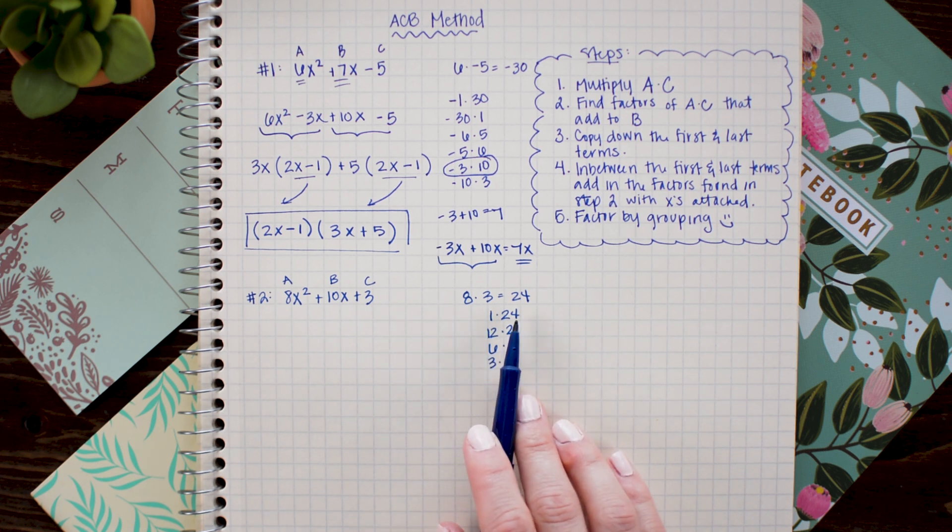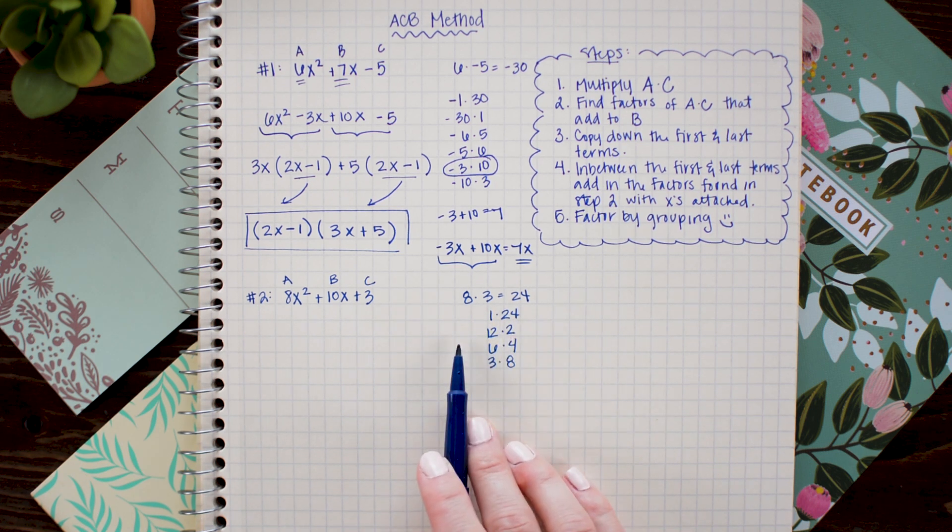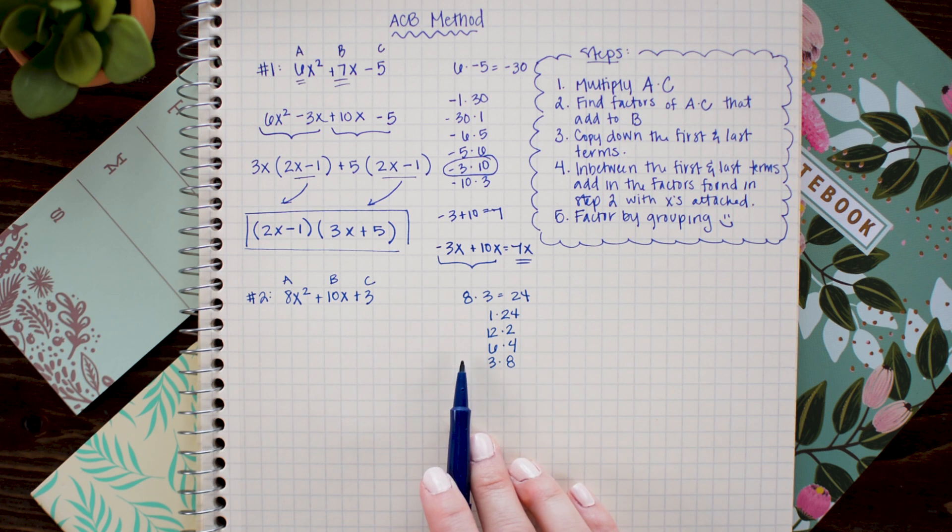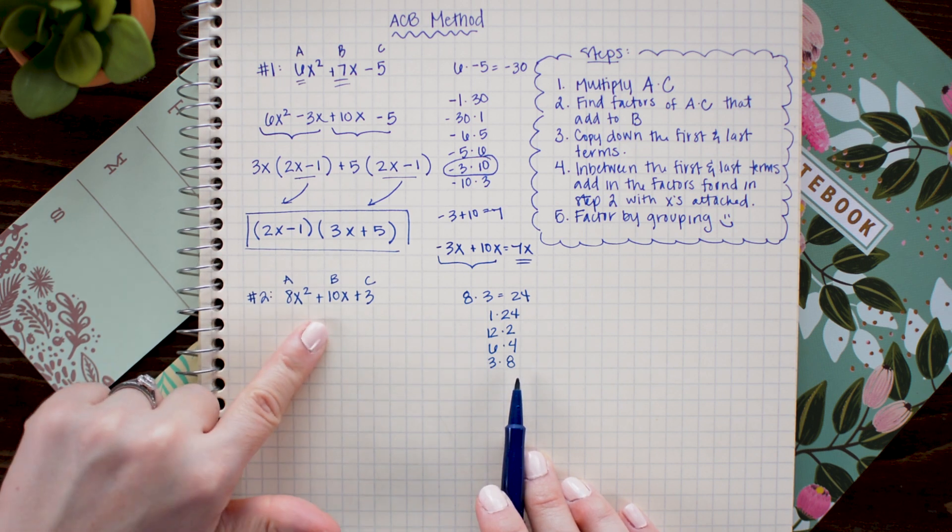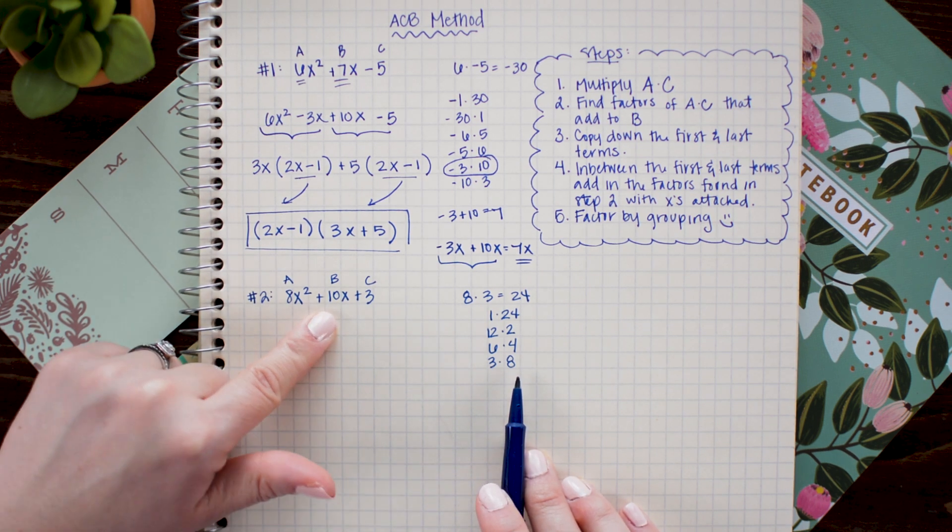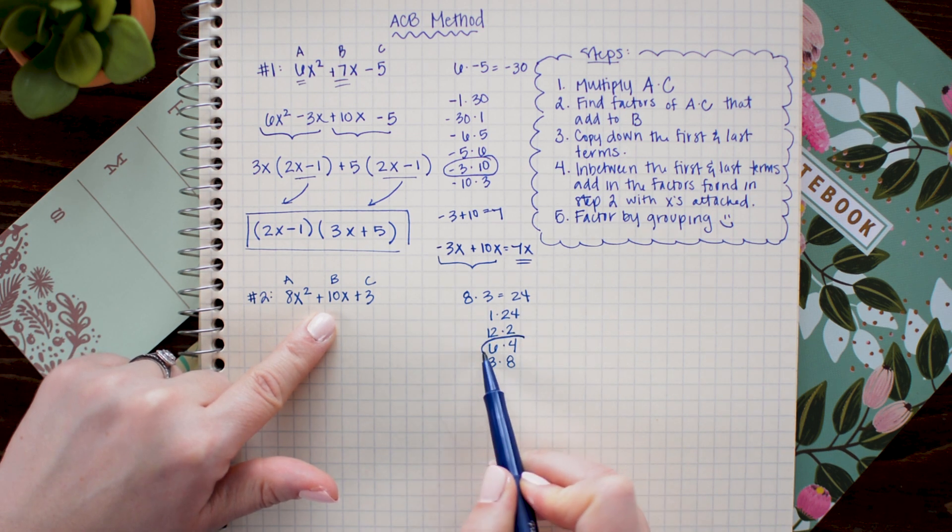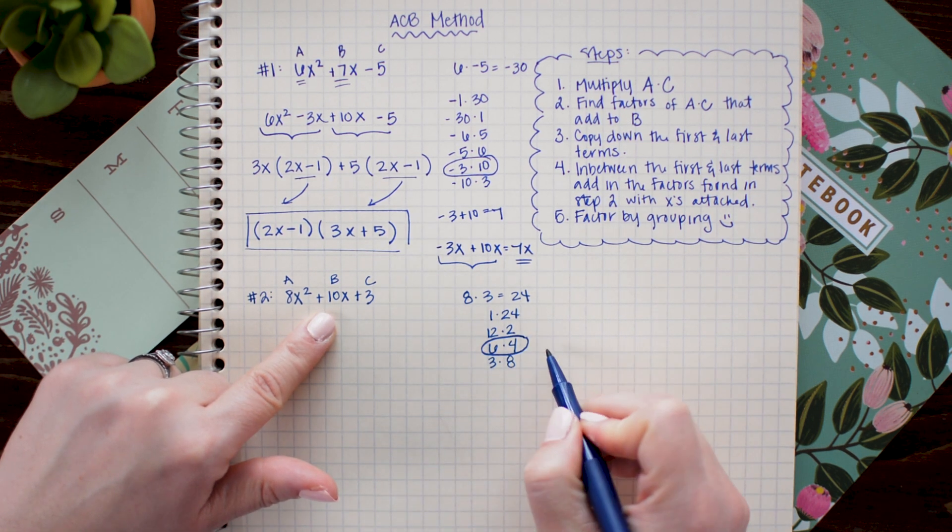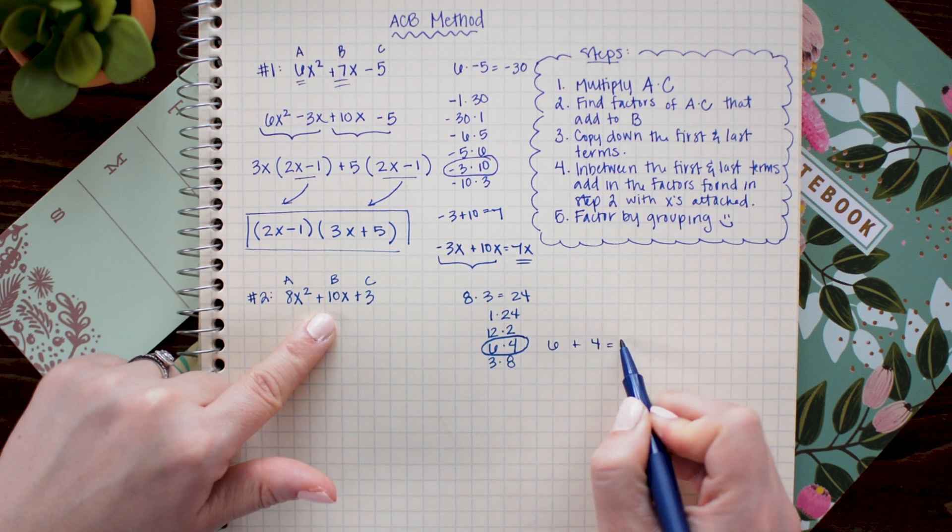Now notice here because in our quadratic we have all positive coefficients I needn't write out any of the negative factors. So that means I don't have to write negative 1 times negative 24, negative 12 times negative 2, negative 6 times negative 4, or negative 3 times negative 8. I automatically know that these are not going to be the correct factors so I simply just write out the positive ones for this example. Next I am going to look for the pair of factors that combine to make a positive 10. In doing that it looks like 6 times 4 is the pair that I want since 6 plus 4 equals 10.